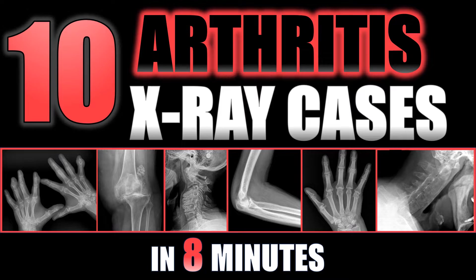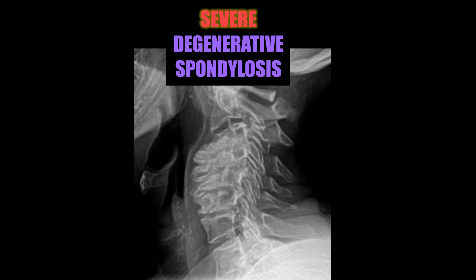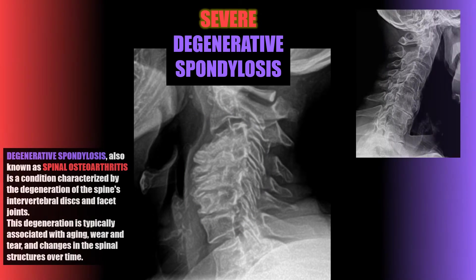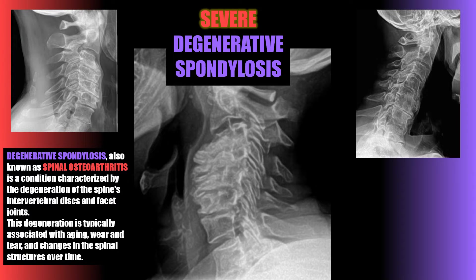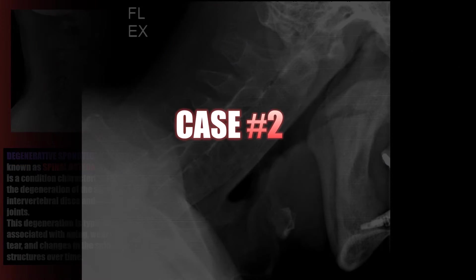Welcome to X-ray review. In this video we're going to go through 10 different arthritis cases seen on X-ray. Case number one is a good example of severe degenerative spondylosis, or severe degenerative arthritis of the cervical spine. Degenerative spondylosis, also known as spinal osteoarthritis or degenerative disc disease, is characterized by the degeneration of the spine's intervertebral discs and facet joints, typically associated with aging, wear and tear, and changes in spinal structures over time.